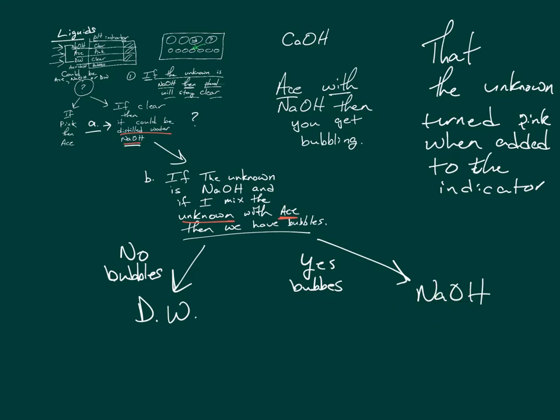What I said in class was that the unknown turned pink when added to the indicator. So that makes it acetic acid — we didn't have to go all the way down the logic tree. It turned pink, so we know it's acetic acid. We were done right there. Does the change in color indicate a chemical reaction? Yes — the indicator is chemically changing, which changes the color. So that's it for the liquid part of the write-up.